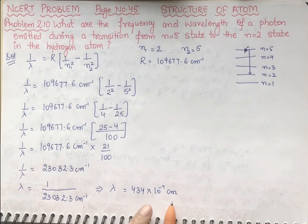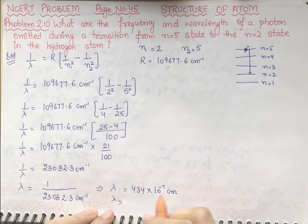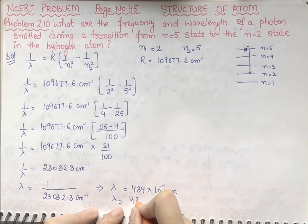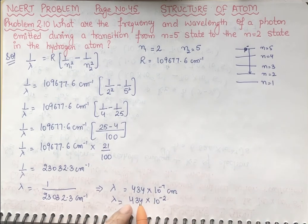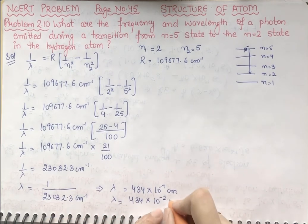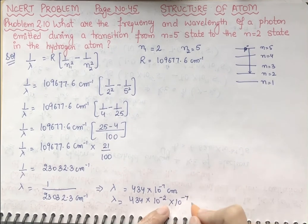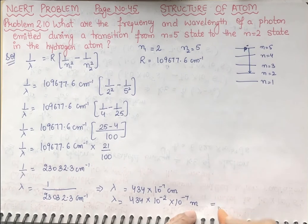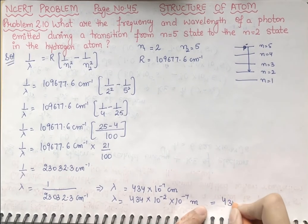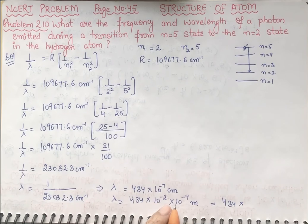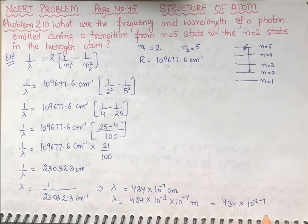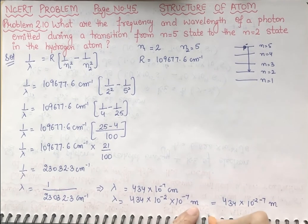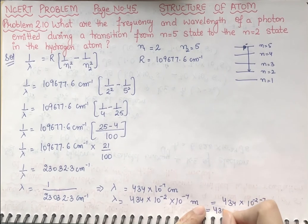I have done the multiplication in rough. So, lambda equals 434 times 10 raised to power minus 7 centimeter. To convert to meters, I multiply by 10 raised to power minus 2. Since we are multiplying powers, it will be 10 raised to power minus 2 plus minus 7 — that means 10 raised to power minus 9. So lambda equals 434 times 10 raised to power minus 9 meter.